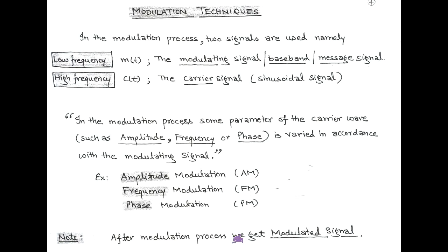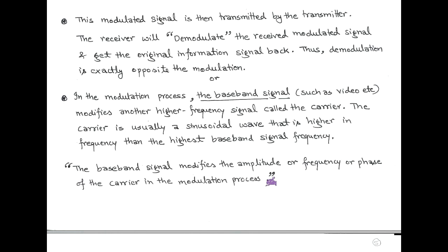After the modulation process at the transmitter side, the signal is called the modulated signal. Before modulation, it is called the modulating signal or message signal, but after modulation, it is called the modulated signal. This modulated signal is transmitted by a transmitter through the communication channel and received by a receiver. At the receiver side, we have a demodulation process. Demodulation is exactly opposite to modulation, and with the help of demodulation, we get the original information at the receiver side.